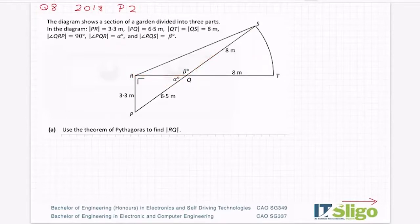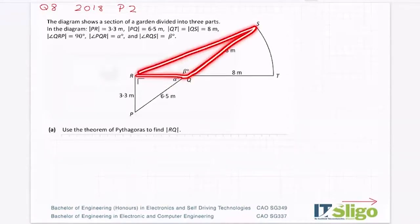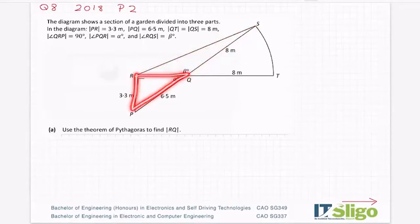Okay, so use the theorem of Pythagoras to find the length of RQ. So across here. You can see that side RQ belongs to two triangles, this one up here, or of course it could be this one here. So have a look and see which triangle makes sense to take.